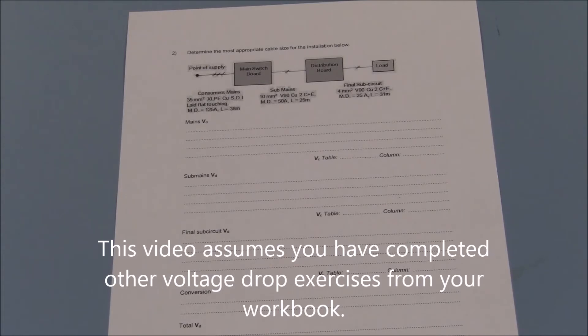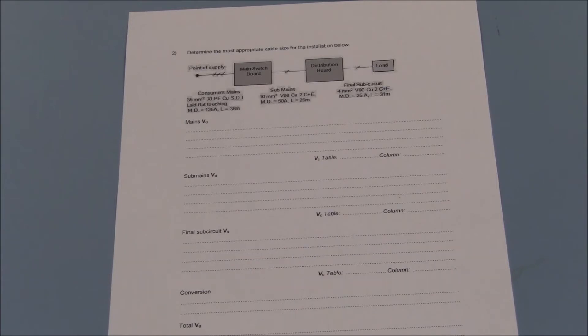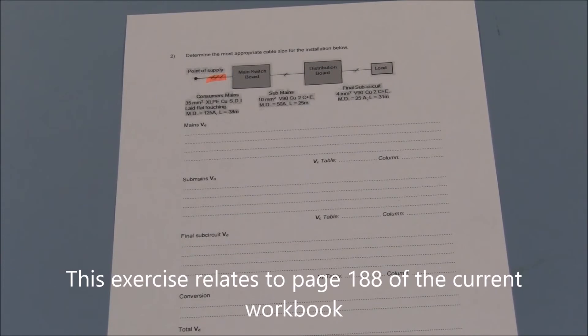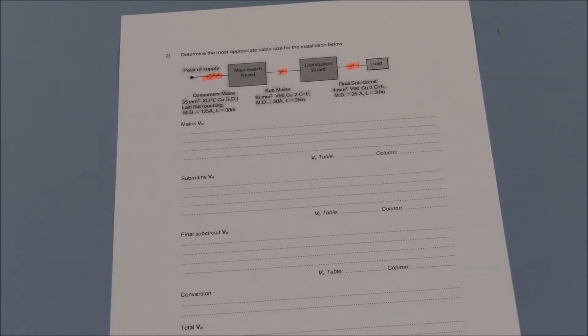AS3000 states voltage drop shall not exceed 5% between the point of supply and any other point within the installation. In this example, the installation consists of both three phase and single phase components. As a result, we are unable to use the maximum value of 20 volts for a complete three phase installation or 11.5 volts for a complete single phase installation.